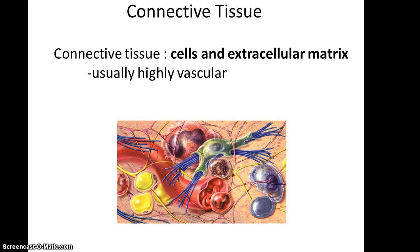Connective tissue is cells and the extracellular matrix that surrounds them. In connective tissue, you often don't have the cells directly contacting each other, but instead are more indirectly connected through the surrounding extracellular matrix. Also, connective tissue tends to be highly vascular, so it has blood vessels throughout it.